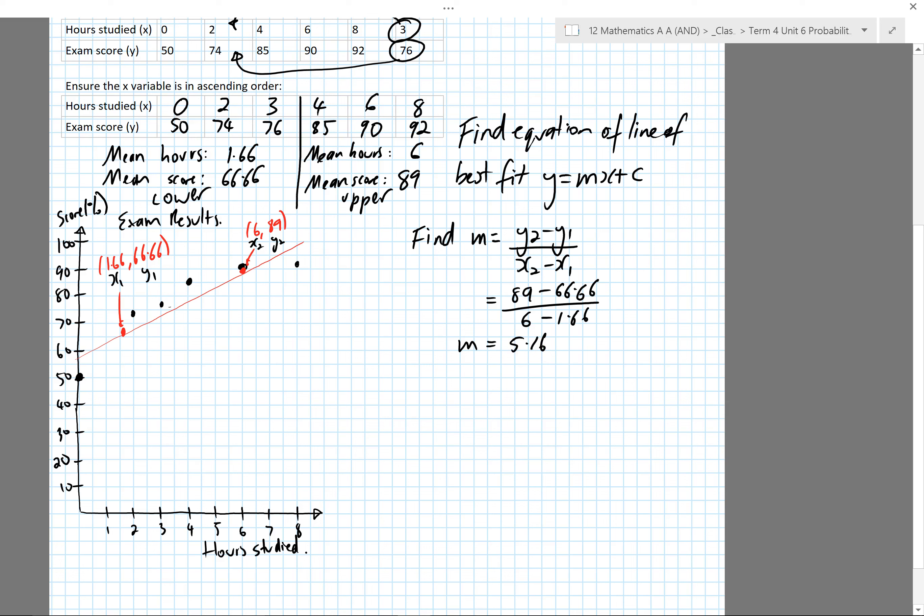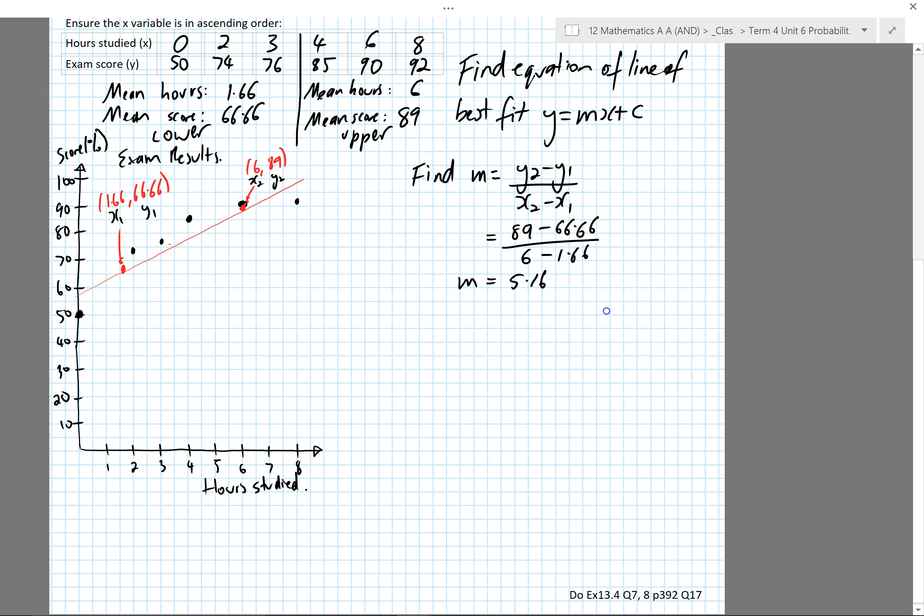What's the meaning of 5.16? It means that every time, say I'm at a point here, if I increase x by 1, it means I increase y by 5.16. In other words, if you study for another hour, you'll get another 5.16% on your exam. Okay, so I've found m, need to also find c.